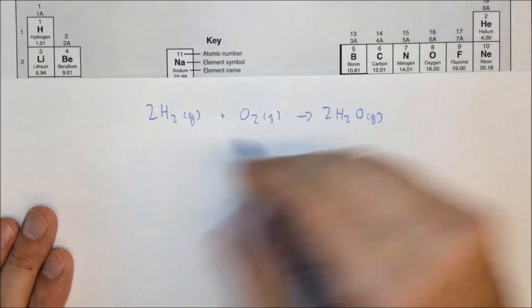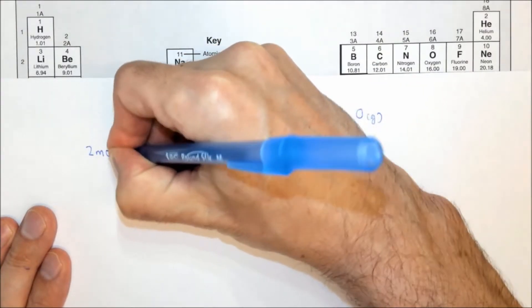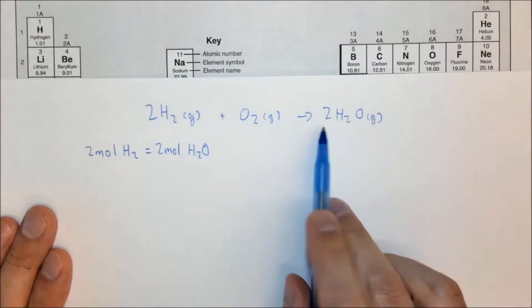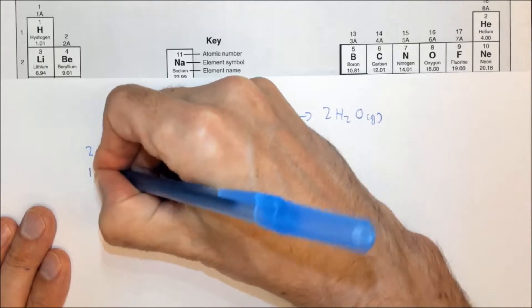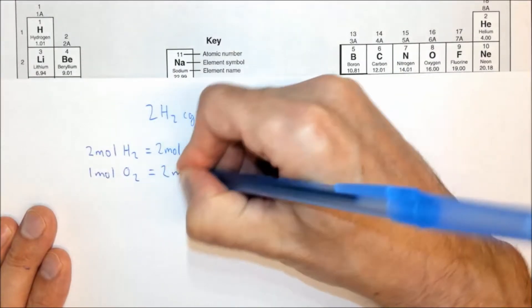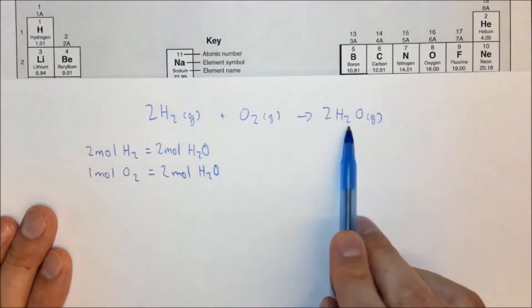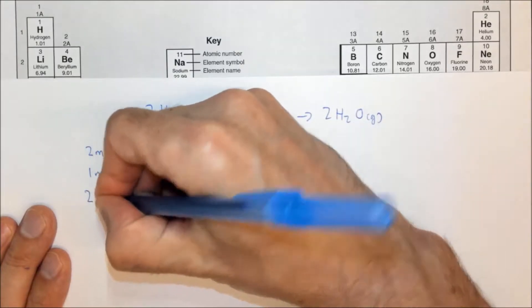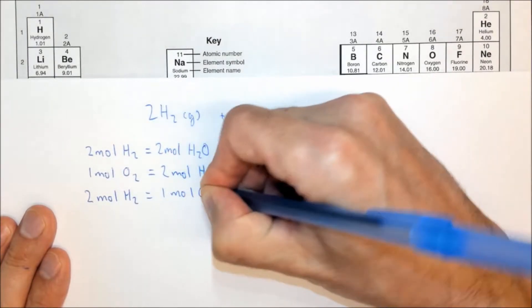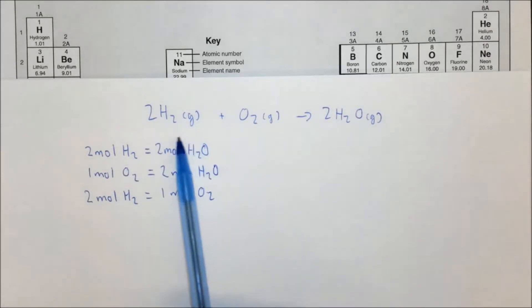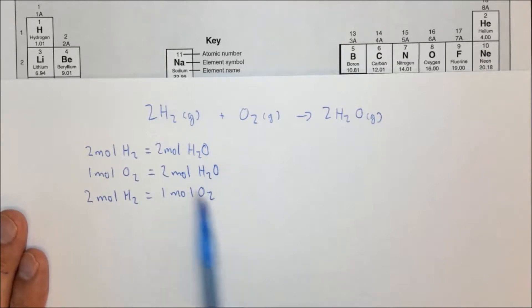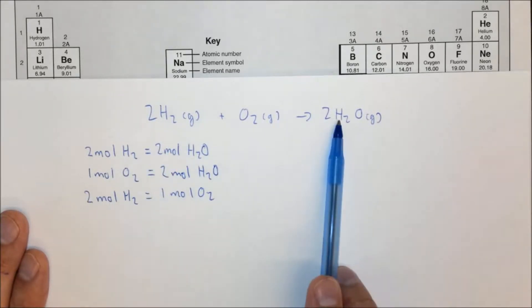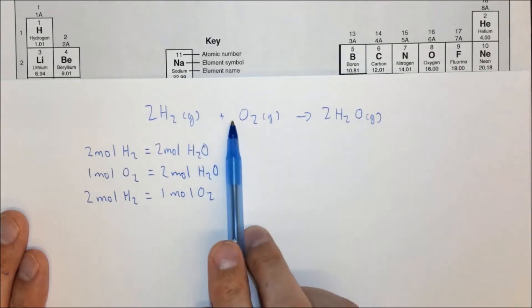This balanced chemical equation can give us several equalities. It can tell us that two moles of hydrogen equals two moles of water — for every two of these we react we get two of these. It could tell us that one mole of oxygen equals two moles of water — for every one oxygen we react we make two waters. Or it could tell us that two moles of hydrogen requires one mole of oxygen to react with it. These equalities are all based on the stoichiometric coefficients, the numbers in front of each compound. If there's no number, it's one.